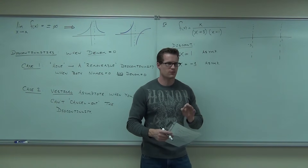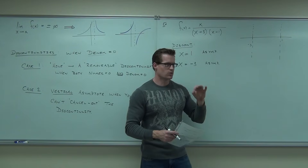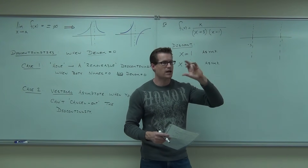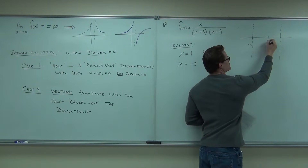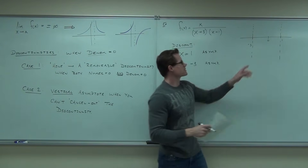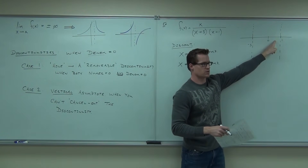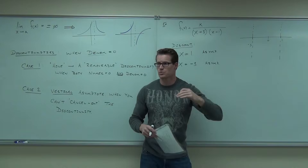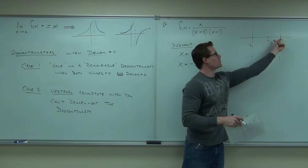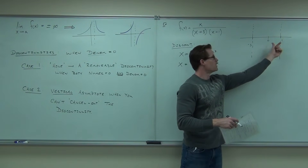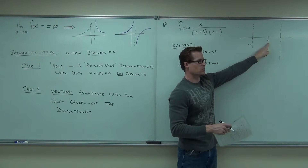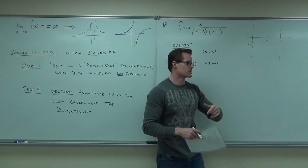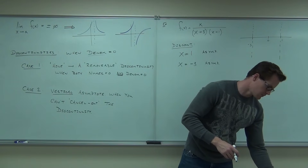Plug in numbers from each interval. For x=-4, x=-1, x=0.5, and x=2, determine the sign of the fraction. If the result is positive, the function goes to positive infinity; if negative, it goes to negative infinity. You have only two asymptotes but effectively four intervals to test because zero separates the region between -3 and 1.